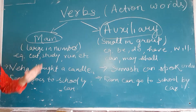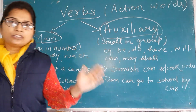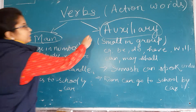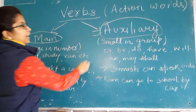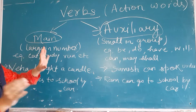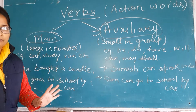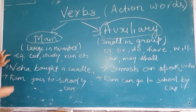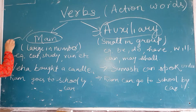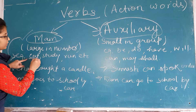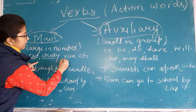Main verbs are very large in numbers. However, auxiliary verbs are very small in a group — bhoor zahada nahi hotte auxiliary verbs. When you know about main verb, for example, main verbs are: eat, studying, run, go.